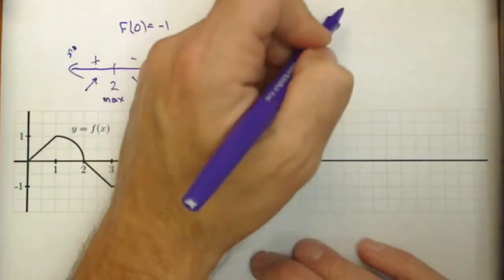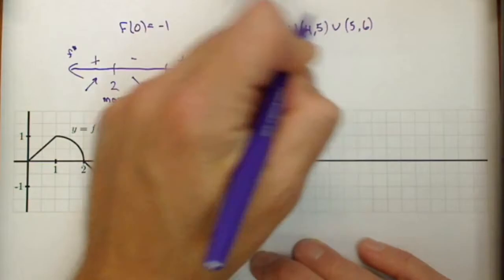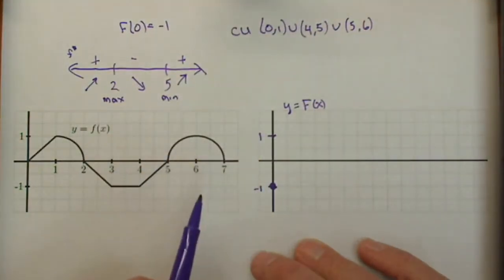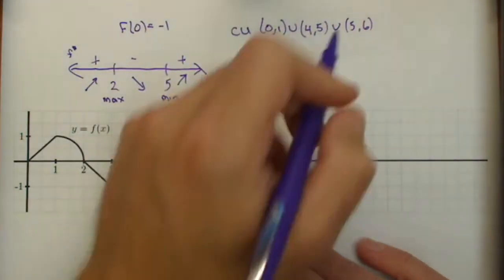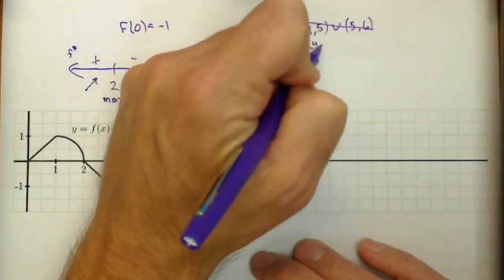I guess we could go all the way to 6. We have kind of a corner point there. So we could have just gone from 4 to 6 because it's increasing the whole time, and so our graph will look concave up the whole time. So let's rewrite that as 4 to 6.